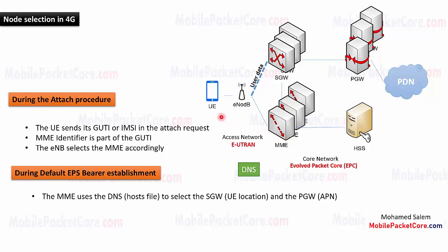So what if the UE did not send its GUTI as its identifier and sent its IMSI instead? In this case, the eNB will use the configuration locally applied to it in order to select the MME. The configuration applied to the eNB contains the default MME that this eNB shall connect to.